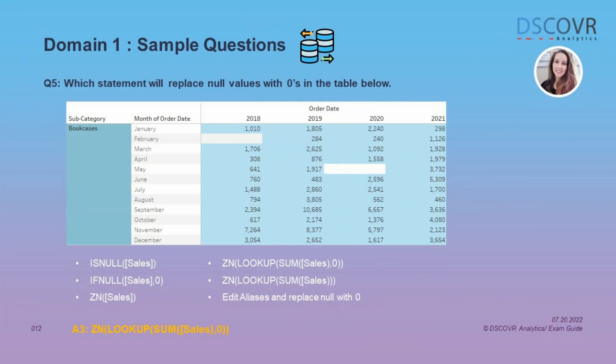You may see some tricky questions related to cleaning operations such as this one. This question is asking you to choose the correct statement that will replace null values with zeros. Try to answer this question correctly without looking at the answer. If you can't, make sure you know the difference between isNull, ifNull, ZN, and lookup functions as well as their syntax.